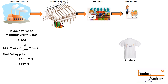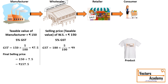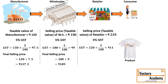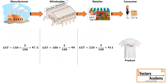Once the wholesaler has purchased the product, he can decide his own selling price. He decides the selling price to be 180 rupees. Again, 5% GST is added, which comes out to be 9 rupees, so the final selling price for the wholesaler will be 189 rupees. The retailer purchases the product at 189 rupees and marks his price at 220 rupees for the consumer. Again, 5% GST is added, coming to 11 rupees, so the final selling price is 231 rupees.